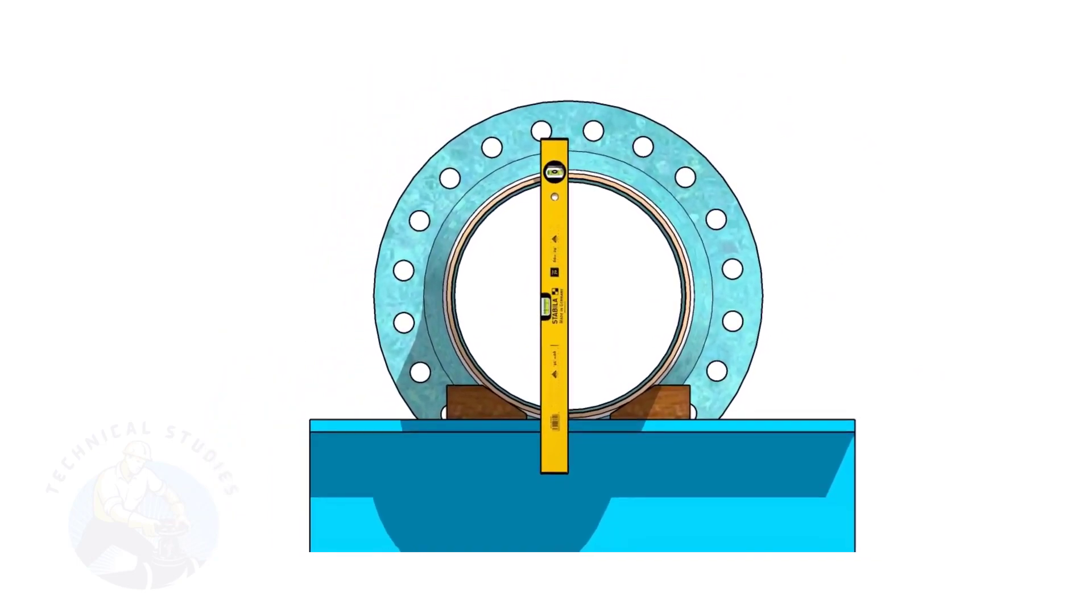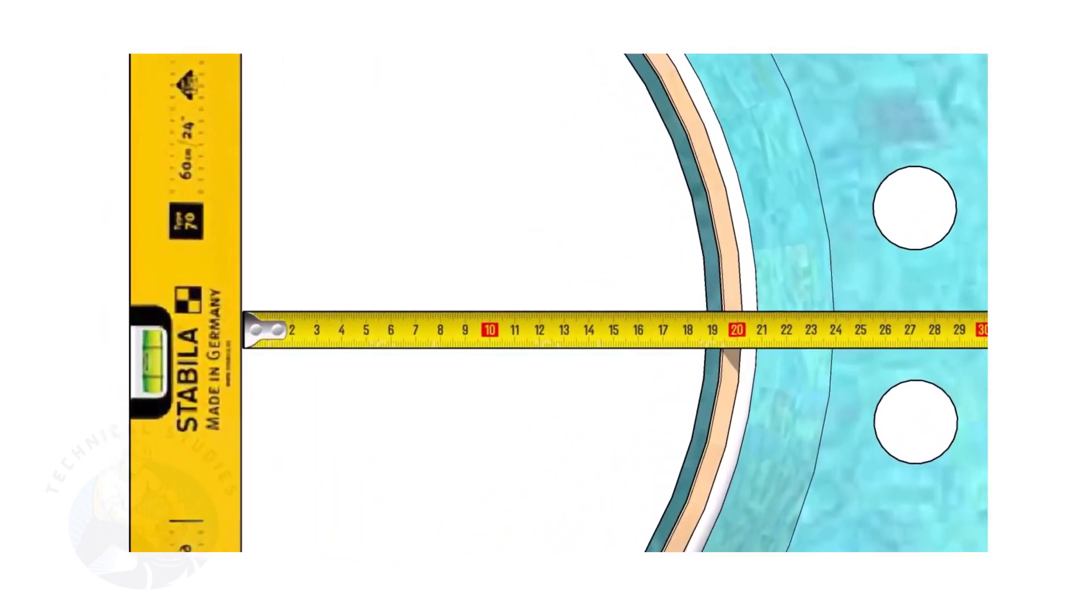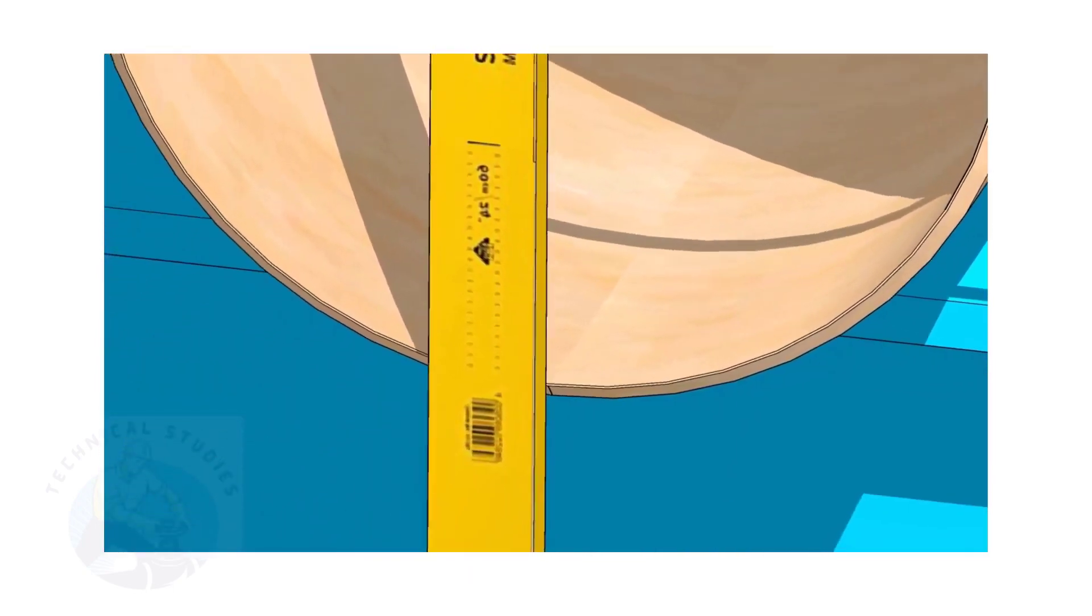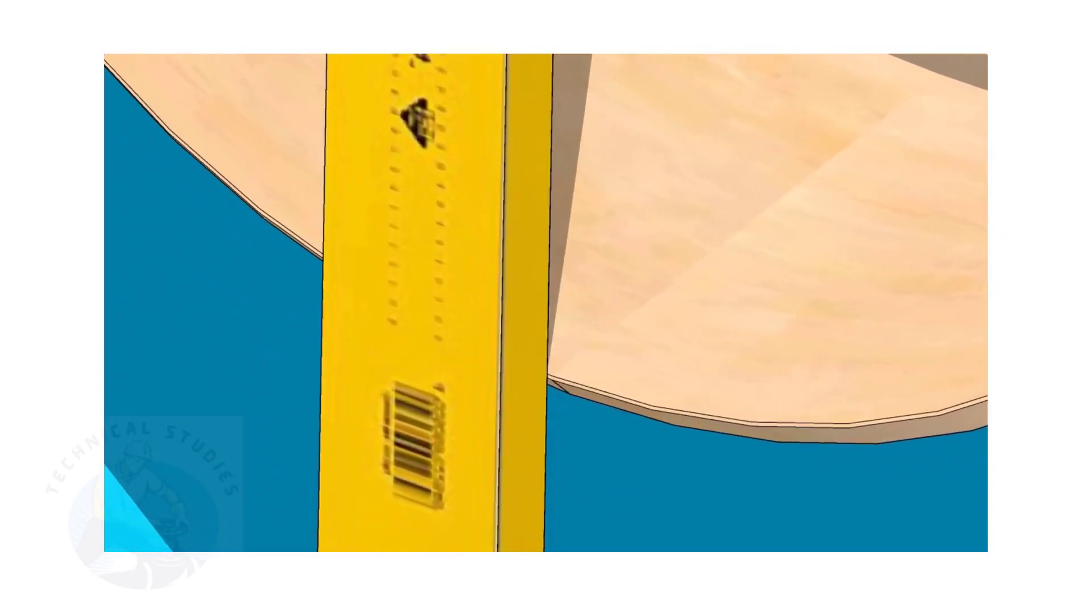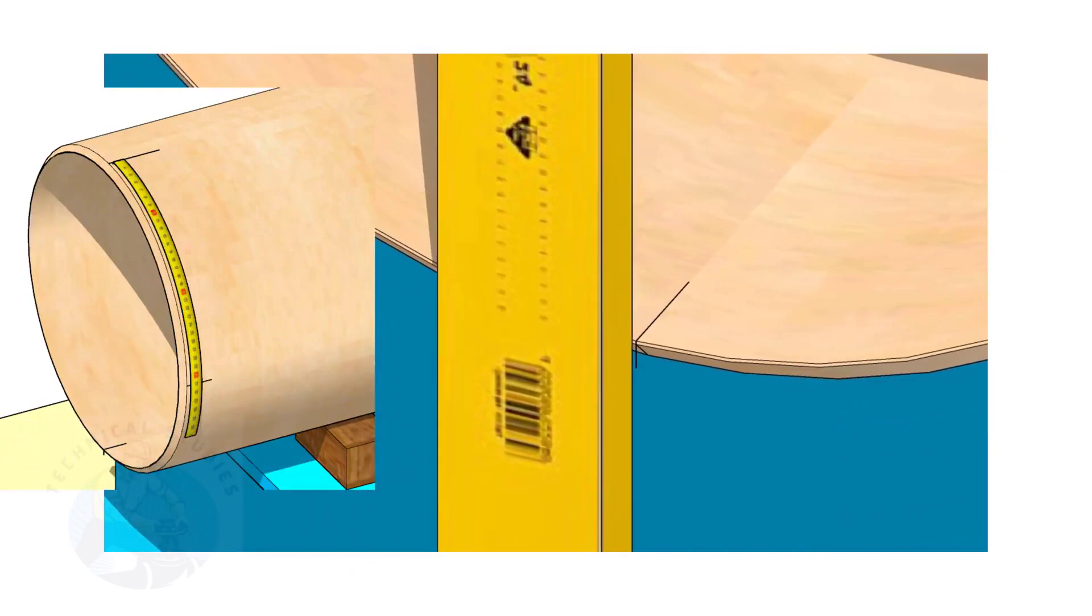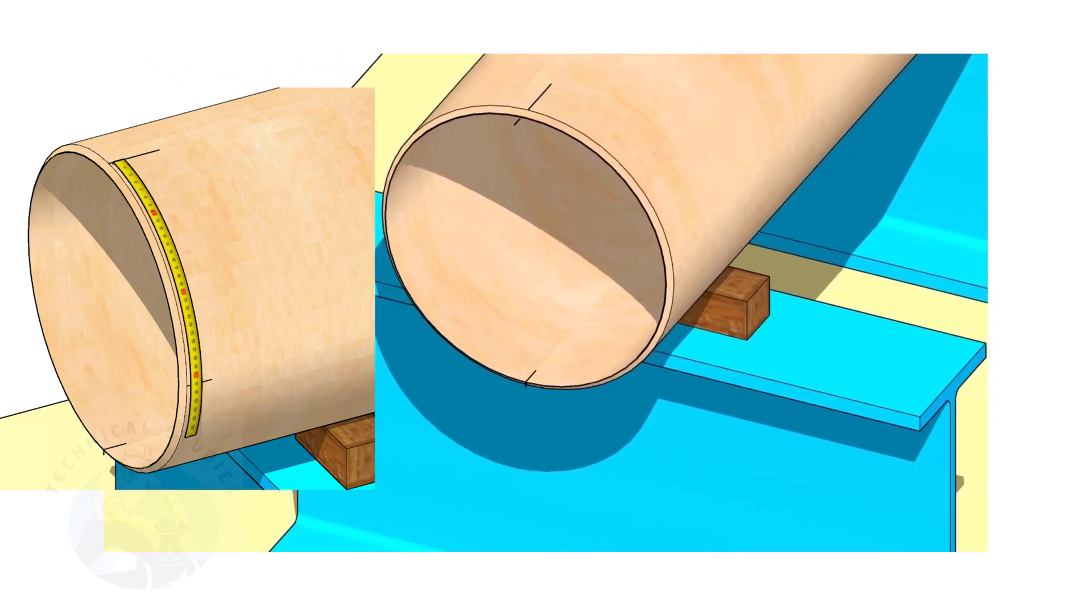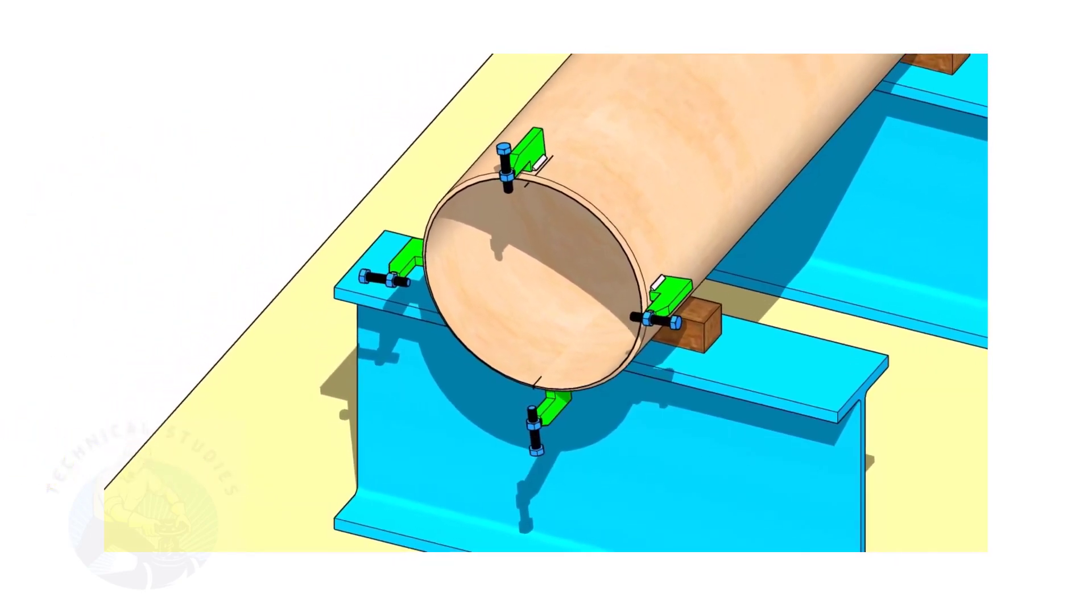Hold the spirit level vertically and transfer the top center mark to the bottom side as shown. Mark the quarter circumference on both sides of the pipe.